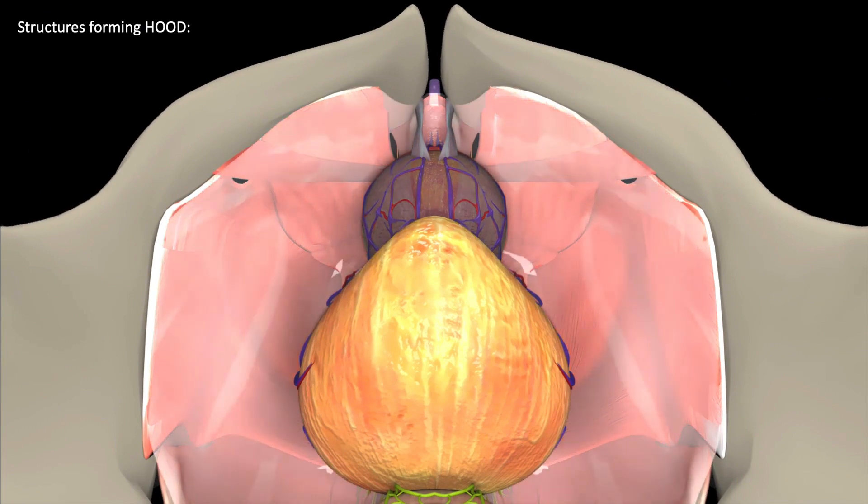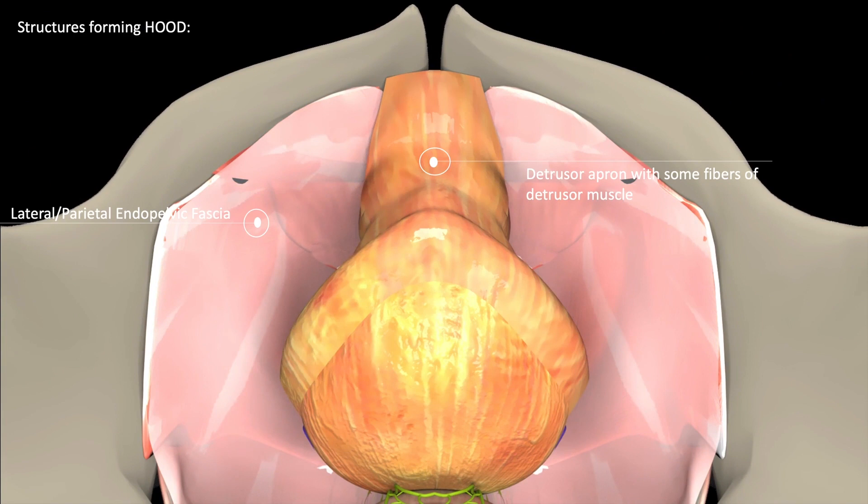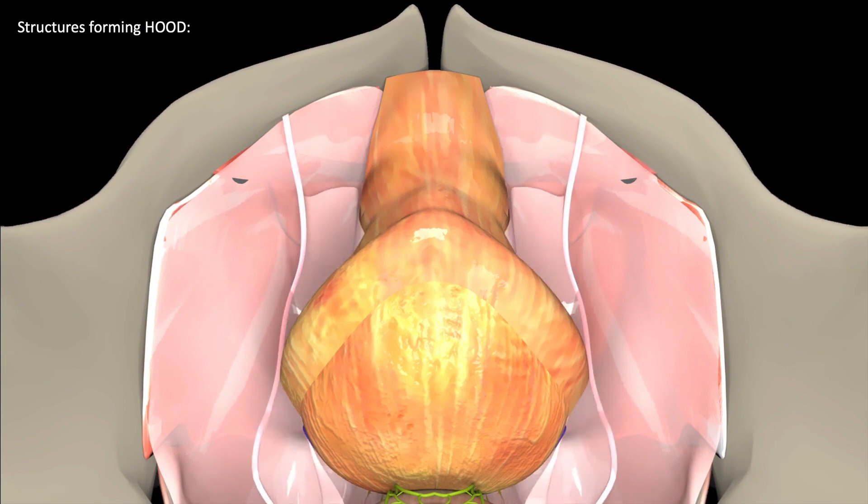The puboprostatic ligament complex comprises the puboprostatic ligaments, arcus tendineus, and puboperinealis muscle. This complex contributes to the formation of the hood, which is preserved in the hood technique of robotic radical prostatectomy.